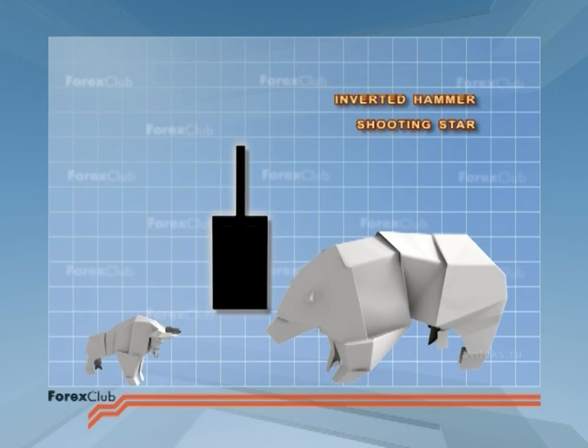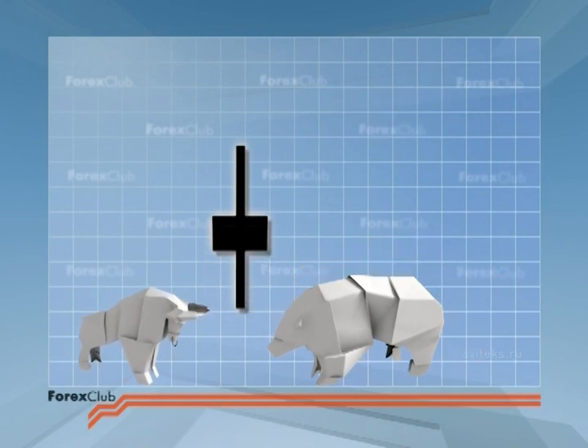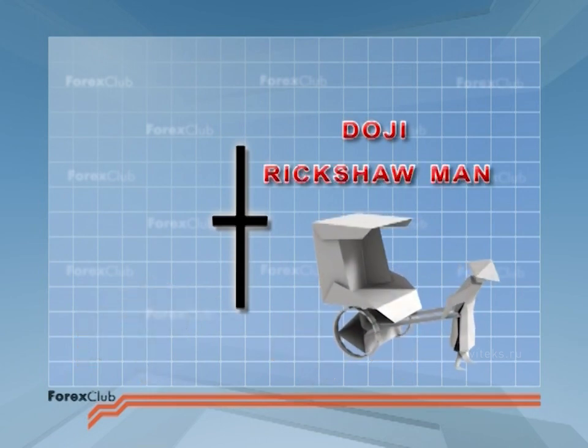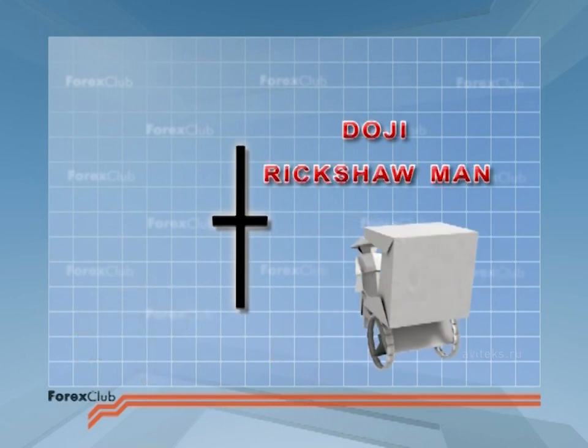But finally, the bears counter-attack fades. Prices rise once more and at the end of the period, price closes at the same or almost the same level at which it opened. Voila, the doji. This type is known as the long-legged doji or the rickshaw man.